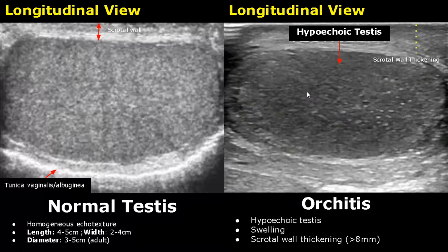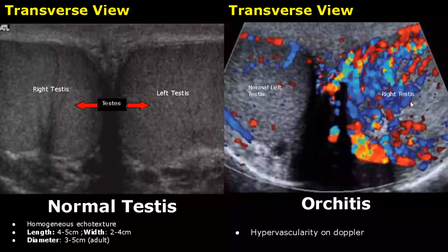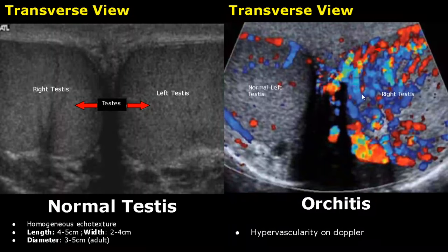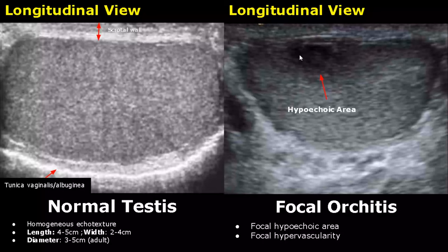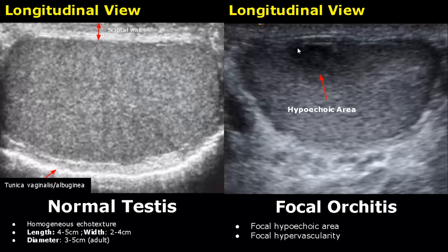Orchitis is the inflammation of the testis. The testis will be hypoechoic and swollen, and scrotal wall thickening will also be seen. On color Doppler, hypervascularity will be seen in the inflamed testis with a large amount of blood flow in the affected testis. A focal abscess can also occur, presenting as a focal hypoechoic and hypervascular area.